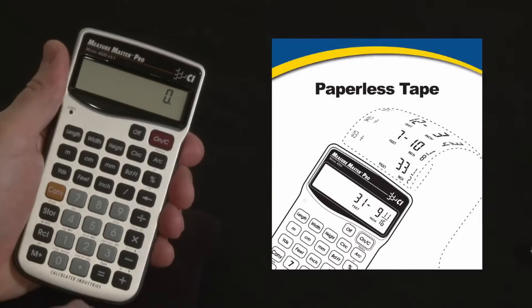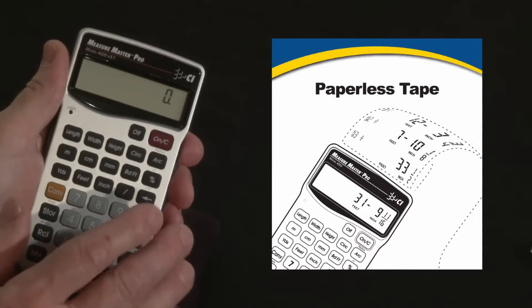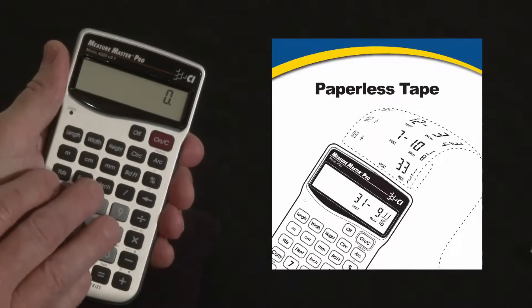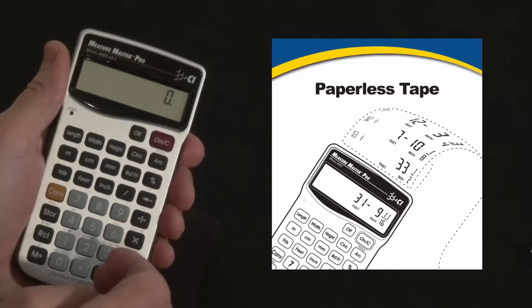Now let me show you how to use your Measure Master Pro's paperless tape function to save you a lot of time. One of the primary uses of the calculator is adding strings of dimension, which is a good idea.